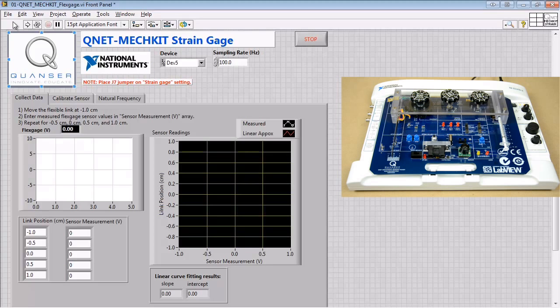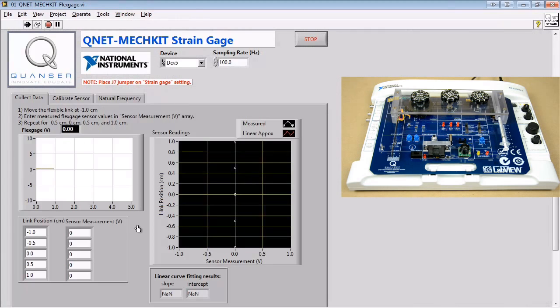In the first experiment, we'll be collecting data from our strain gauge and recording it based on moving the flexible link to given positions.